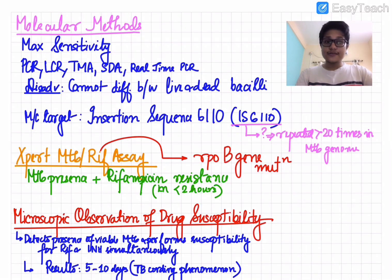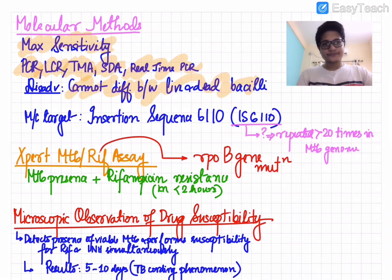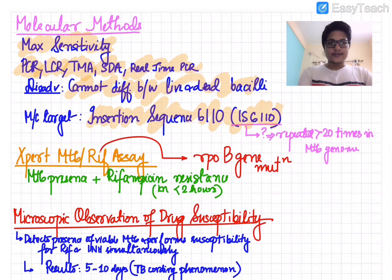Molecular methods have the maximum sensitivity and include PCR (polymerase chain reaction), LCR (ligase chain reaction), TMA (transcription mediated amplification), and real-time PCR. Their disadvantage is that they cannot differentiate between dead and live bacilli since they only detect the genome. The most common target of nucleic acid probes is Insertion Sequence 6110 (IS6110), because it is repeated more than 20 times in the MTB genome.